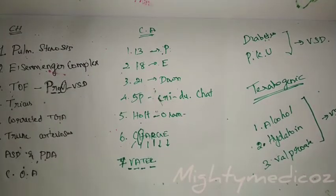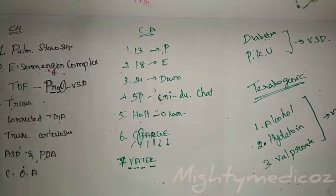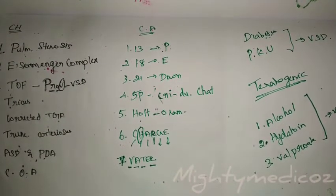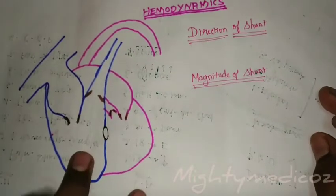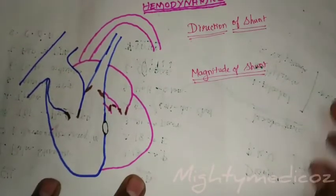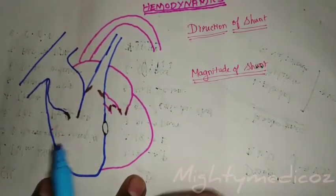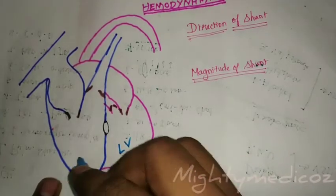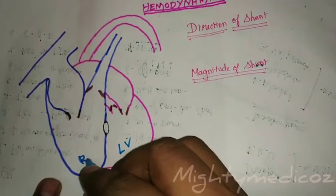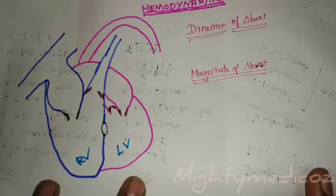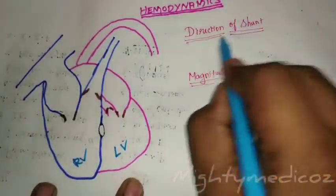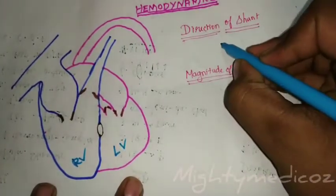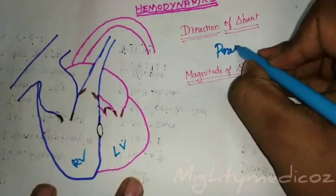Now we are going to deal with hemodynamics of VSD. In the direction of shunt, blood flows from left ventricle to right ventricle — a left-to-right shunt. The direction of shunt depends upon the pressure gradient between the left and right ventricle.